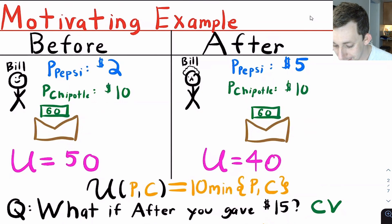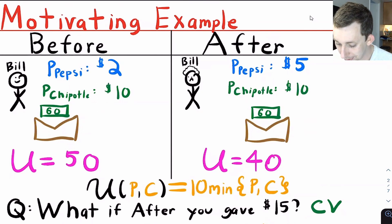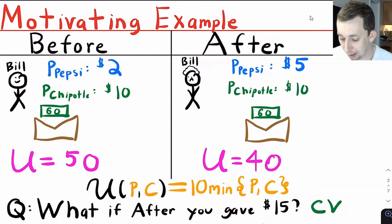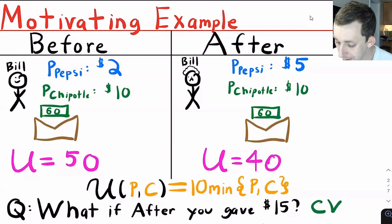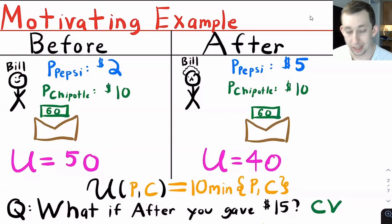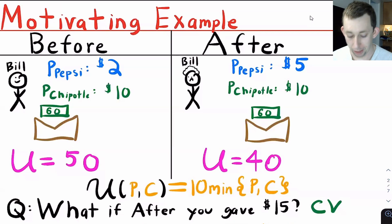After the price change, the price of Pepsi is $5 and the price of Chipotle remains at $10, and Bill still has $60 in his wallet. Now Bill can only afford four bundles, so his utility is 40. You can see that Bill's utility has gone down after this price change.